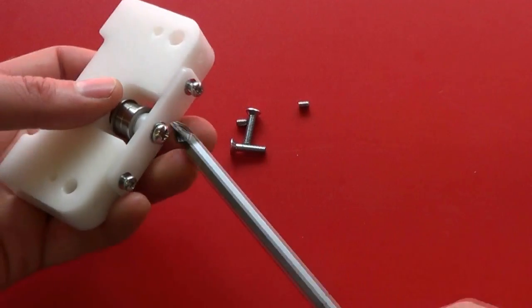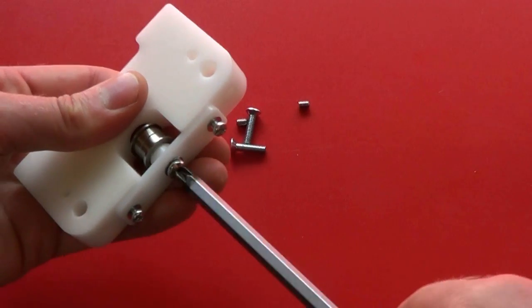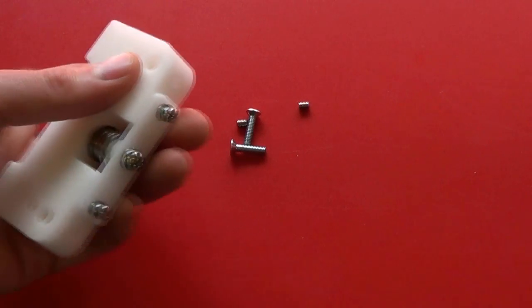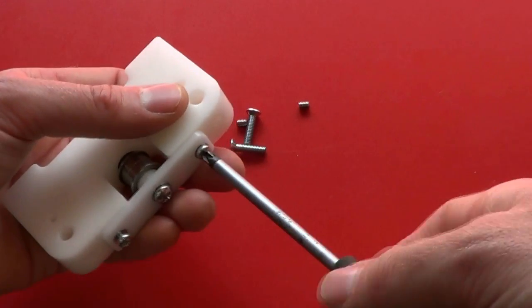Use the posi drive number 2 screwdriver to tighten the central screw and the posi drive number 1 to tighten the outside.